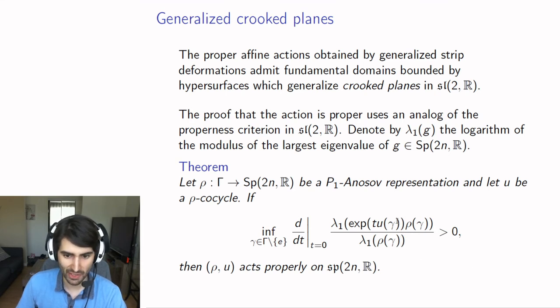We measure how much more contracting each element of our group is, or how fast it's getting more contracting, because this is derivative. And if this is bounded away from 0, then the affine representation acts properly on the algebra of sp2nR.